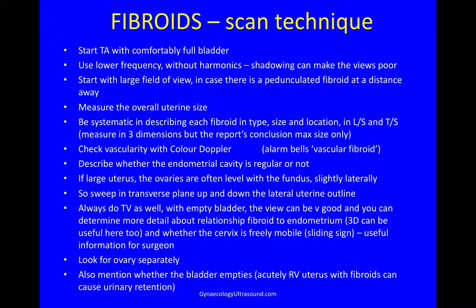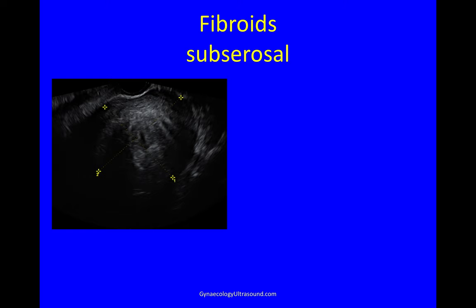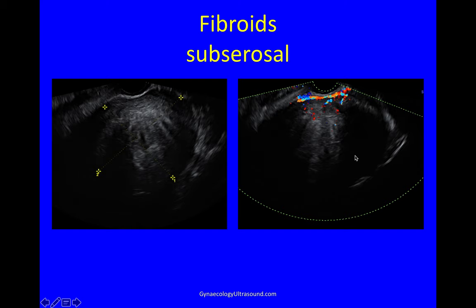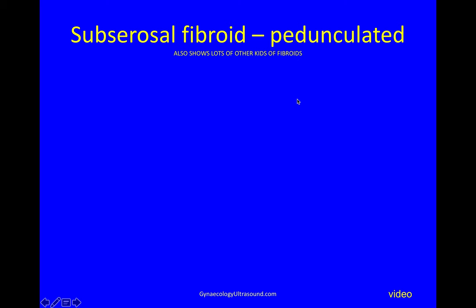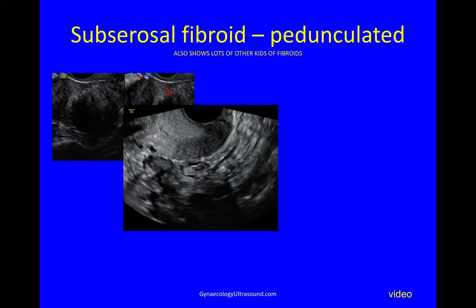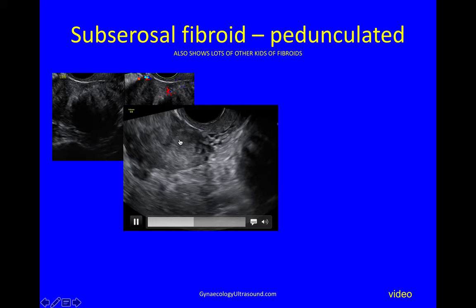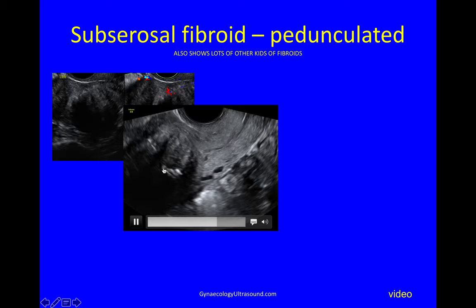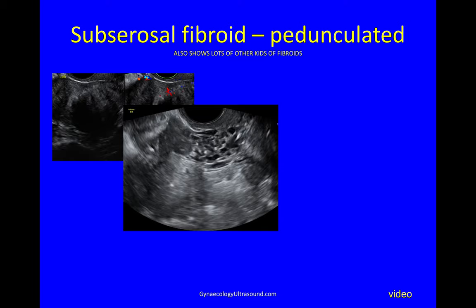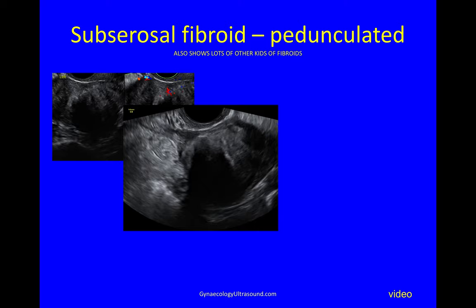Subserosal fibroids can be quite large, demonstrating dense peripheral shadowing and peripheral vascularity only. They can be pedunculated, as in this case. This is an adnexal mass — you can see a round solid mass — but then scanning in the lateral longitudinal plane a pedicle appears connecting to the uterus, and you can see lots of other fibroids there: submucosal, intramural and subserosal, they're all visible.